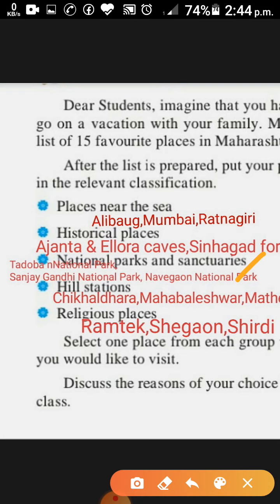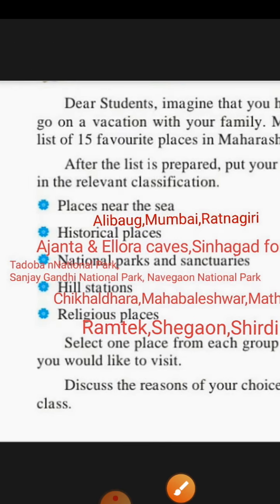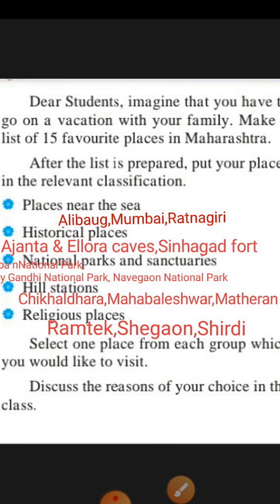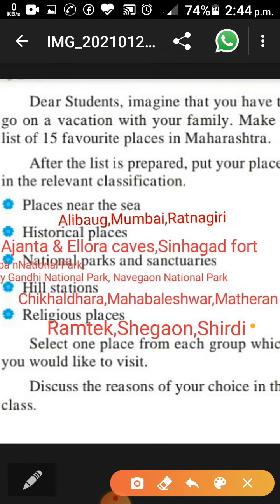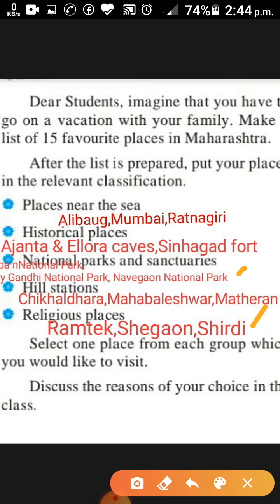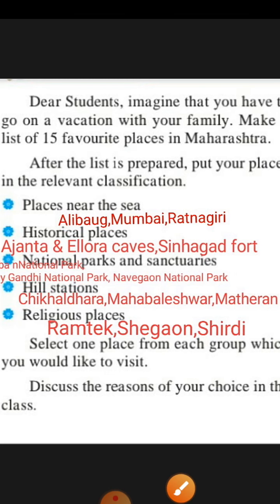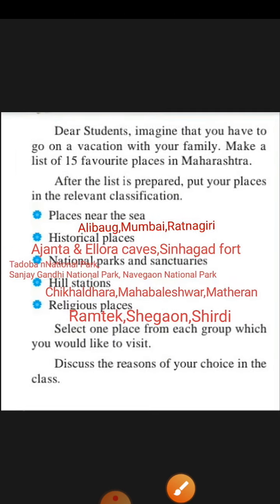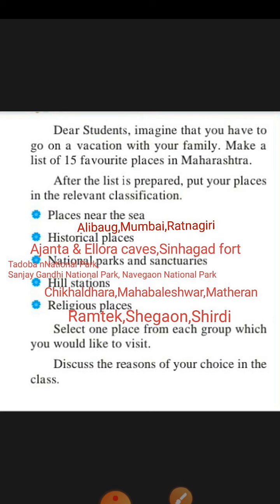Hill stations — we have Chikaldara, Mahabaleshwar, and Matheran. Religious places: Ramtek, Shegaon, and Shirdi. In this way we have 5 types of places — near the sea, historical places, national parks, hill stations, and religious places — with 3 names each, giving us a list of 15 places. Now we have to choose one place and explain why we chose it. This is your personal choice based on your interests.